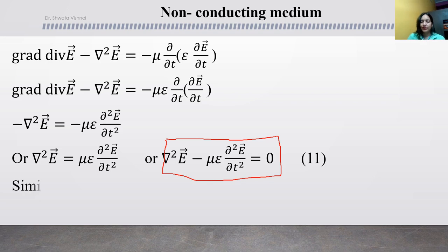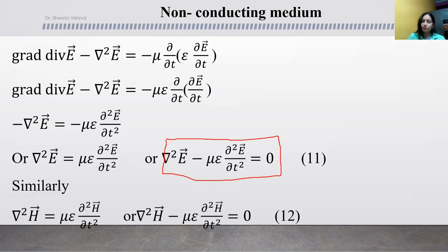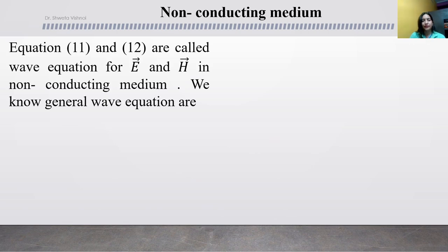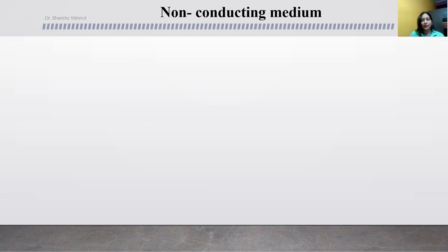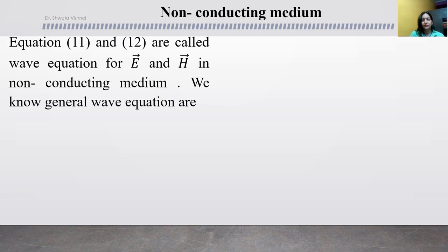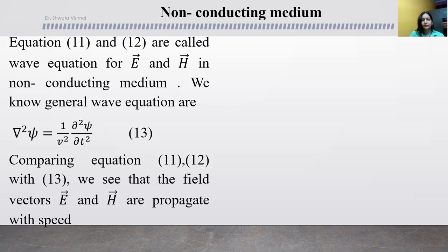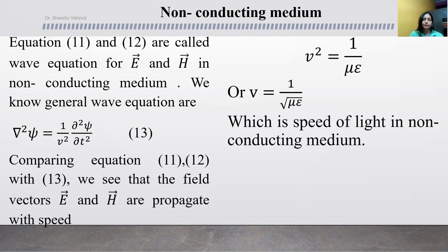Comparing these equations to the general wave equation, V squared equals 1 upon mu epsilon, therefore V equals 1 upon under root mu epsilon. This is the speed of light — the velocity of electromagnetic waves in a non-conducting medium.